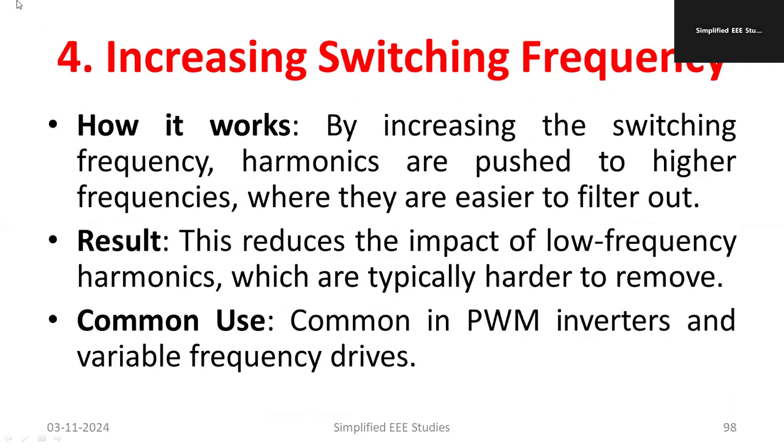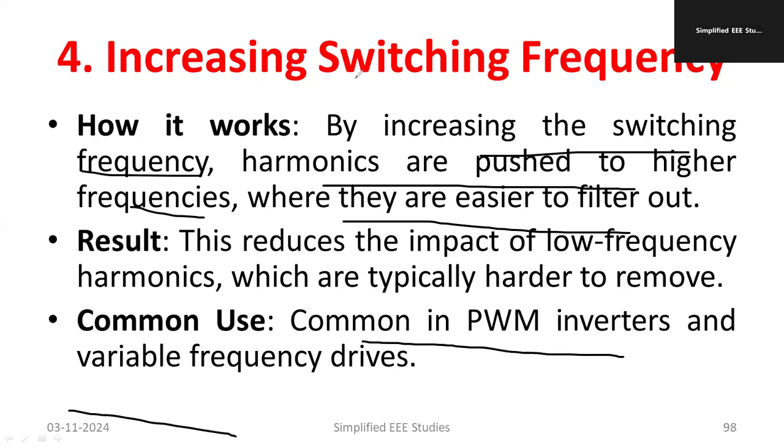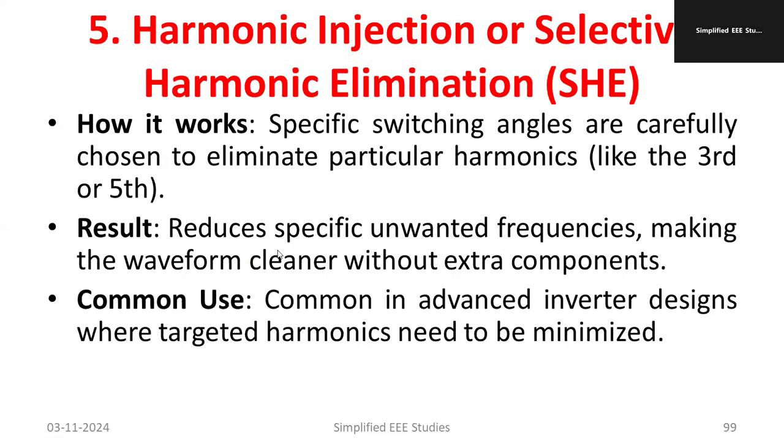Next is called increasing switching frequency. We need to select a high switching frequency devices such as IGBT or MOSFET. Here increasing the switching frequency harmonics are pushed to higher frequencies thereby easier to filter out. Lower order harmonics will be converted into higher value so that it is very easy to use the filter and mitigate it. It reduces the impact of low frequency harmonics which are harder to remove. That is another important thing. Common PWM inverters and VFD these are the major applications of increasing the switching frequency. Also the board size can be reduced if the switching frequency is very high. Losses will be minimized. So how many advantages are there?